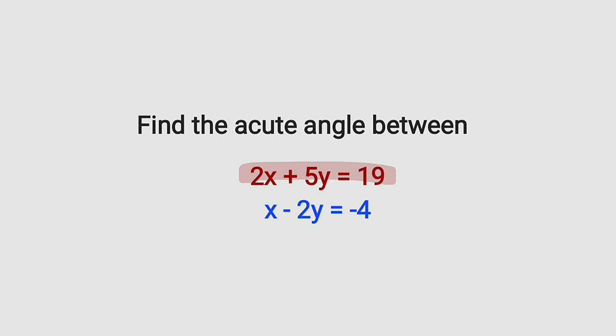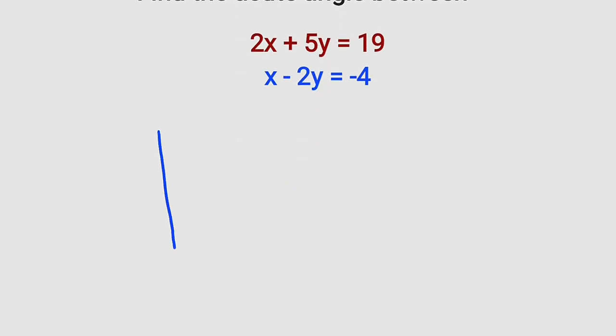What does that mean? Suppose we have a graph like this. For the first function, we have something like this. And for the second function, we have a line like this. They are all linear equations. So this acute angle is what we are looking for, angle theta.